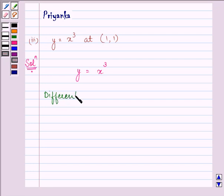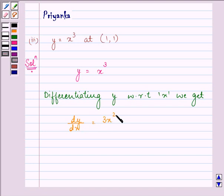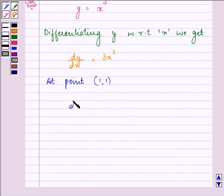On differentiating y with respect to x, we get dy/dx equals 3x squared. Now at point (1, 1), we have its value as 3 times 1 squared, which is equal to 3.